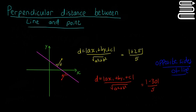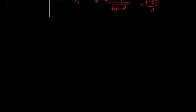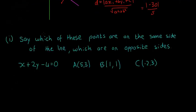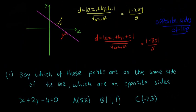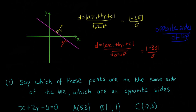So we're going to look at a quick example now. It's asking us which of these points are on the same side of the line and which are on opposite sides. Here's our line with the equation x plus 2y minus 4 equals 0, and we have three points. We have to say which ones are on the same side and which are on opposite sides.